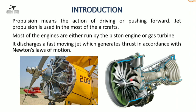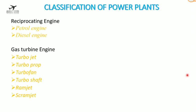This is a piston-propeller engine and this is a gas turbine engine. These engines discharge a fast-moving jet which generates thrust in accordance with Newton's laws of motion. Classification of power plants: reciprocating engine — we have petrol engine, diesel engine; gas turbine engine — turbojet, turboprop, turbofan, turboshaft, ramjet, and scramjet.